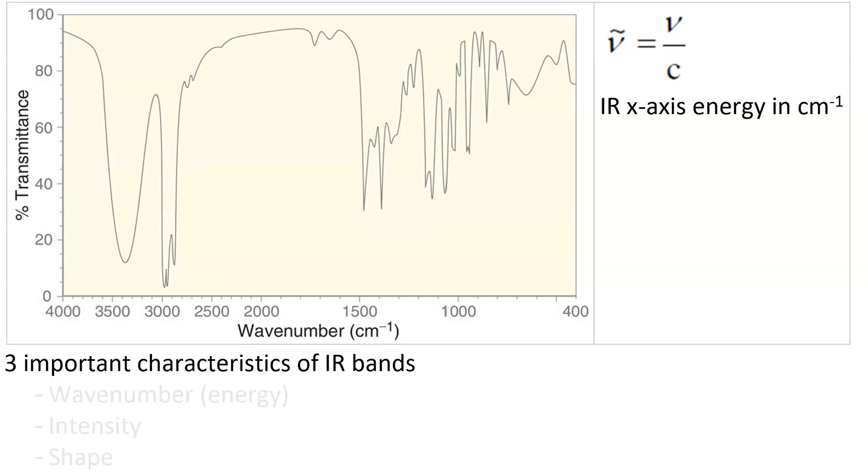There are three characteristics of the IR bands that we have to pay attention to. One is their wavenumber. The further to the left on the graph, the higher the energy, or the higher the wavenumber. So, this band here, at around 3400 wavenumbers, is higher energy than these bands at 3000.